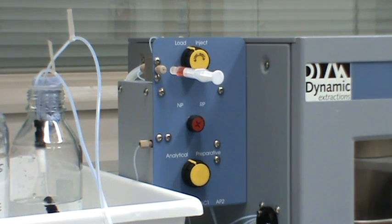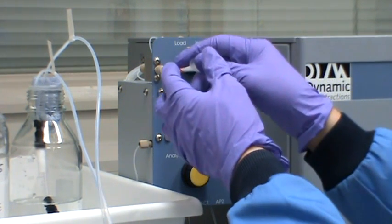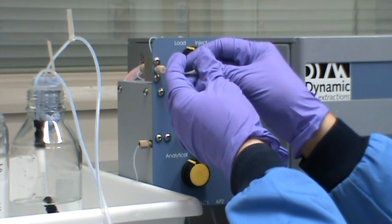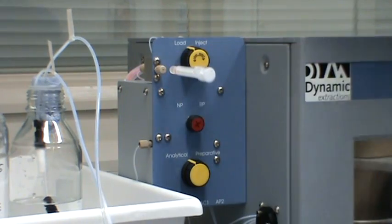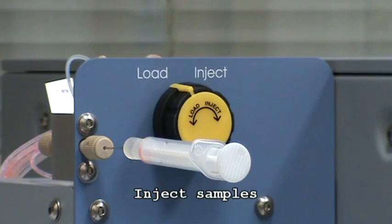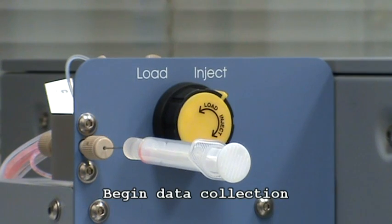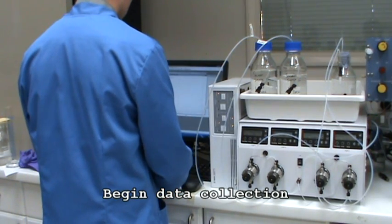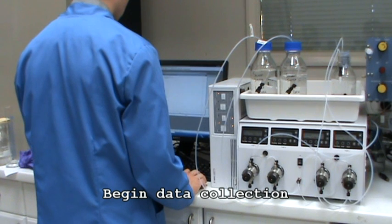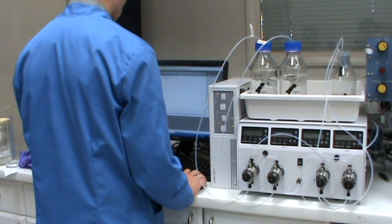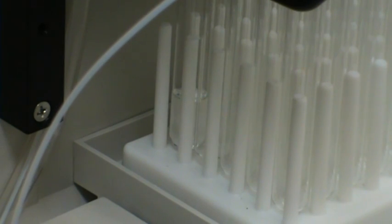Inject the dissolved sample into the sample loop of the valve box. Once the sample is in the sample loop, turn the valve box to inject and the sample will be pumped into the column. Now begin the data collection software.